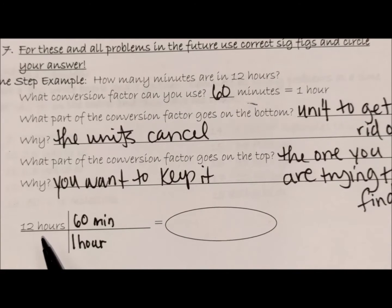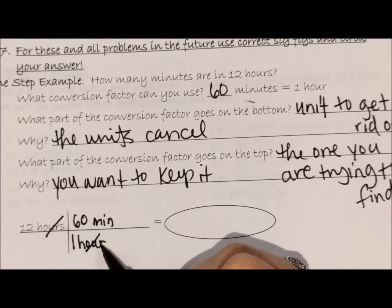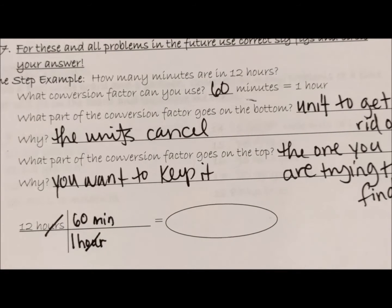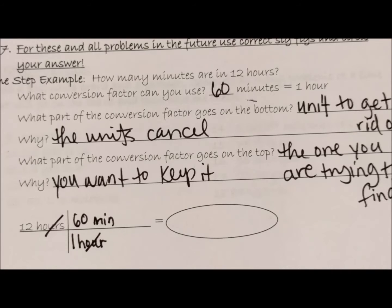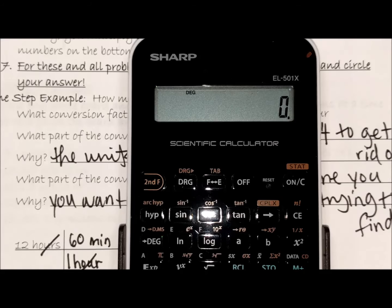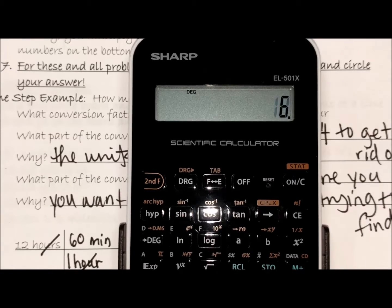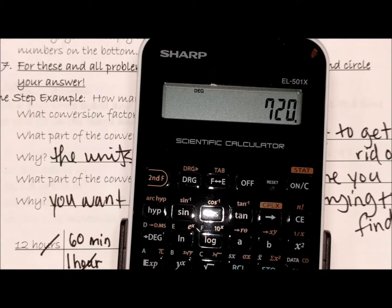And if you can see, 12 hours times 60 minutes divided by hours—the hours will cancel out. So the answer is just 12 times 60. We have 12 times 60, and that's going to be 720.